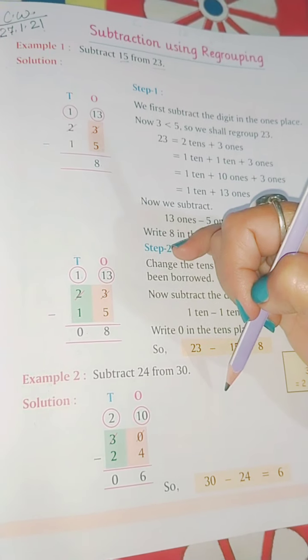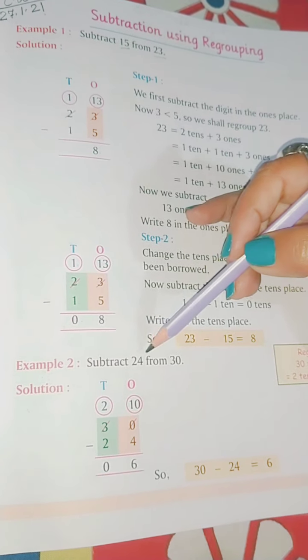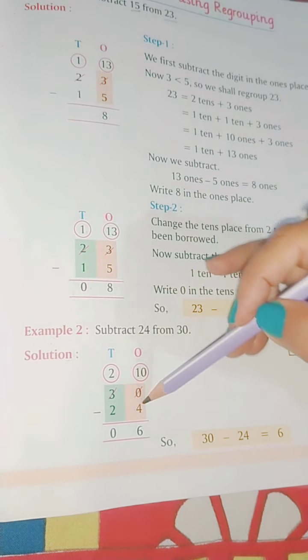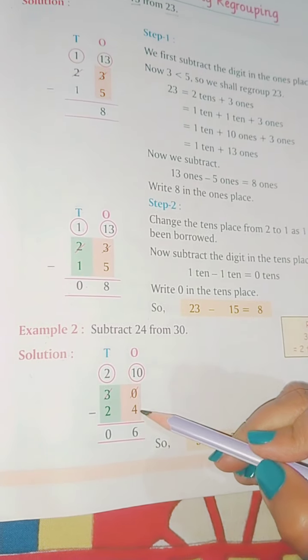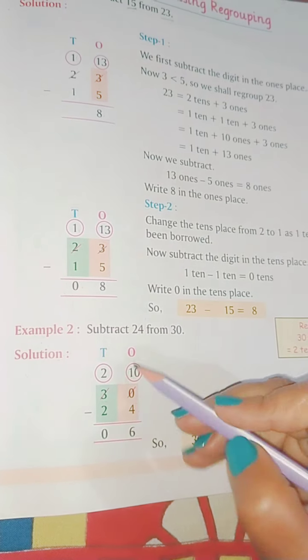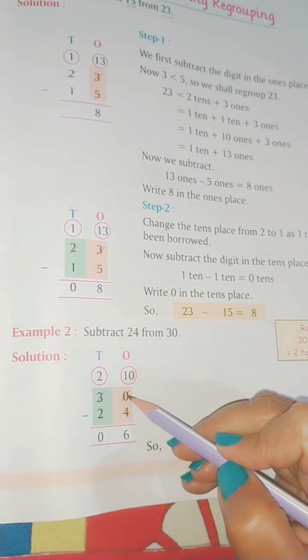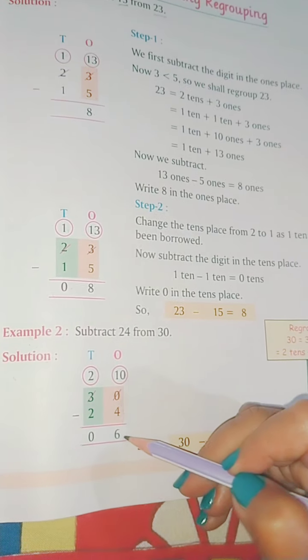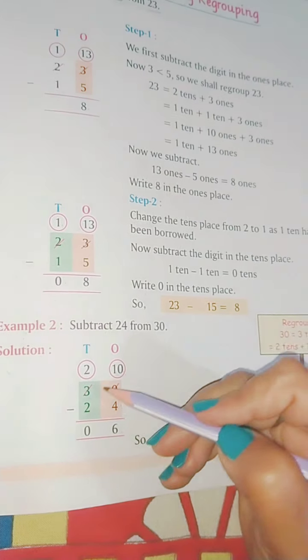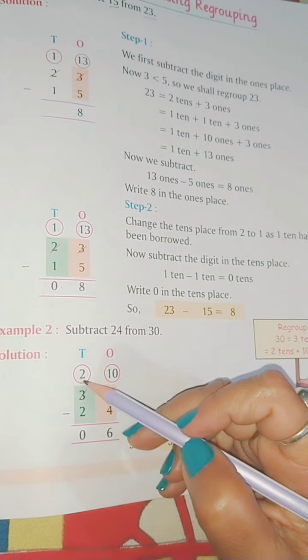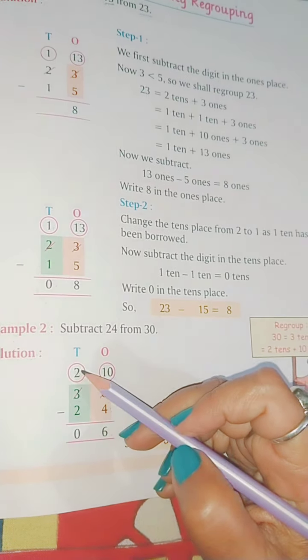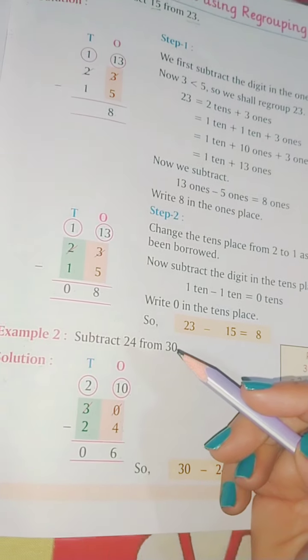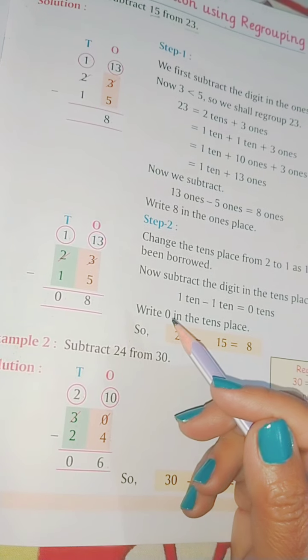Now we move on to the second example. Subtract 24 from 30. So we write 30 on top and 24 down. Now 0 is less than 4, so again we will cut 0, borrow 1 from 3, and it will become 10. So 10 minus 4 is 6. Now here 3 gave 1 number to 0, so only 2 is left here. So 2 minus 2 is 0. Got it?